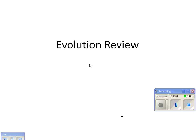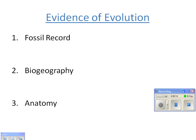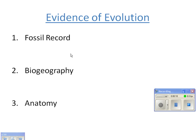We're going to review evolution — that's going to include types of evidence for evolution, how natural selection happens, and then hominin evolutionary trends. Starting with evidence, there are six different types that all point to a common ancestor and descent with modification.